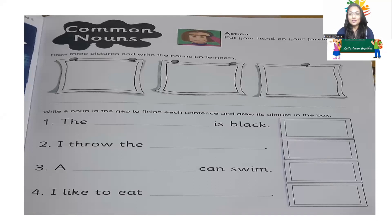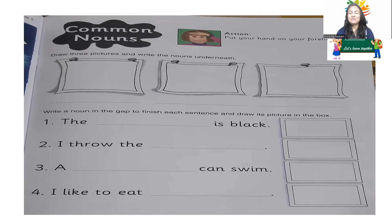You can use any noun in the blanks. For example: 'I throw the ball.' A bird can swim, a duck can swim, a boy can swim, a fish can swim. 'I like to eat' — what do you like to eat? Pizza, burger, junk food — you have to say that. So you can mention any noun in these blanks. Think about which nouns we have used in these blanks — these are all common nouns.